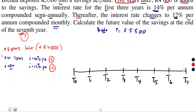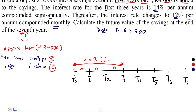Let's analyze the interest periods. For the first three years — years 1, 2, and 3 — when N equals 3, the interest rate was 14% per annum. There is no other effect during those three years.